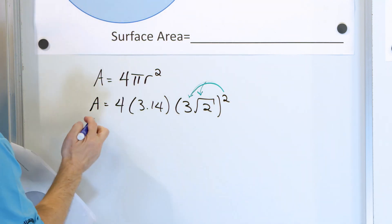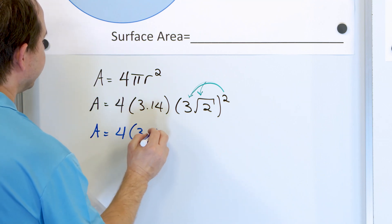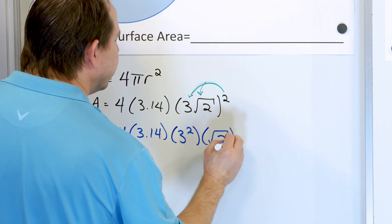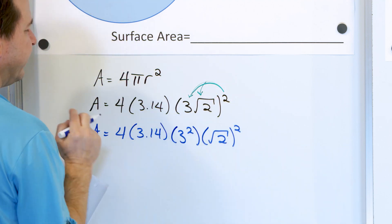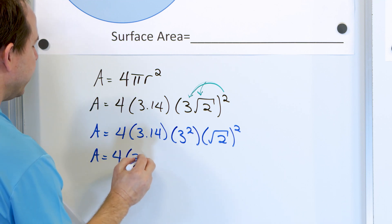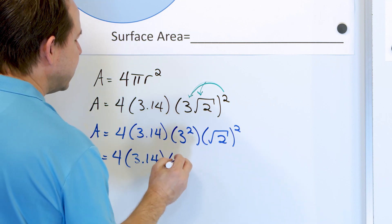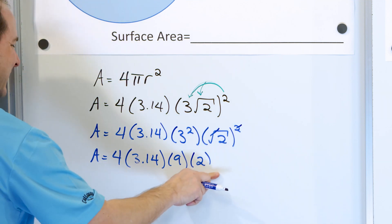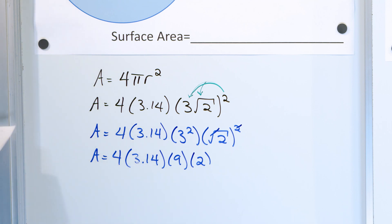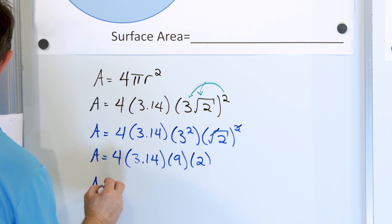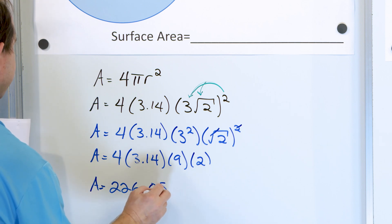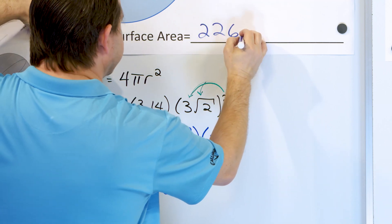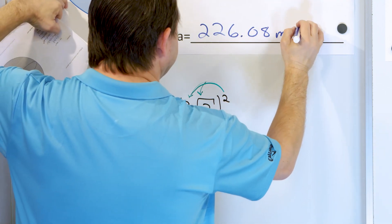So we have four times 3.14, then three squared, and then the square root of two squared. Three squared is nine, and the square root of two squared — the square root cancels the square — so you just have two left over. This essentially becomes four times 3.14 times nine times two. When you take four times 3.14 times nine times two, the area works out to be 226.08. The units in this problem were millimeters, so this is 226.08 square millimeters.